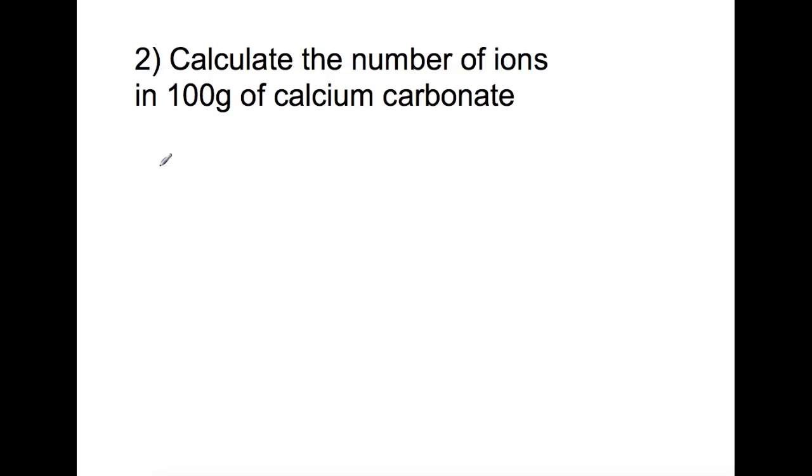Looking at the second example, we're to calculate the number of ions in 100 grams of calcium carbonate. We're going to do the same thing again—we'll be calculating the gram formula mass of calcium carbonate. So we have 40 for calcium, 12 for carbon, and 48 for 3 oxygens, which gives us a gram formula mass of 100 grams.